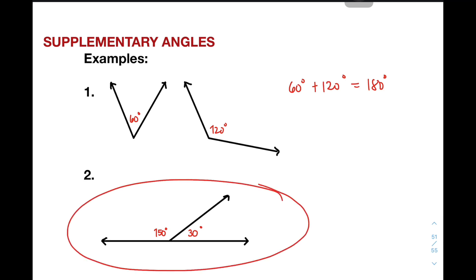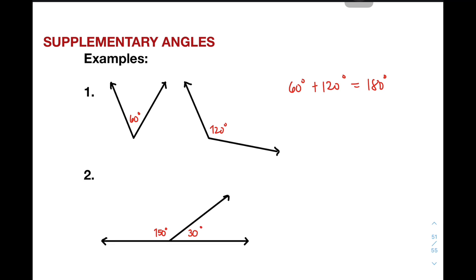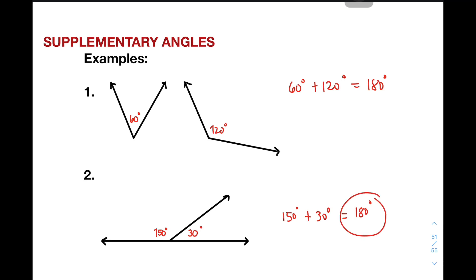Now let's move on with item number two. Obviously, these angles are supplementary because they form a straight angle. But we check given those measurements: one angle measures 150 degrees and the other is 30 degrees. Therefore, they are supplementary angles since their sum is 180 degrees.